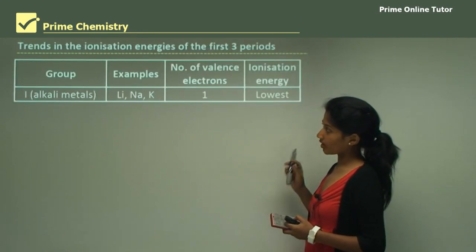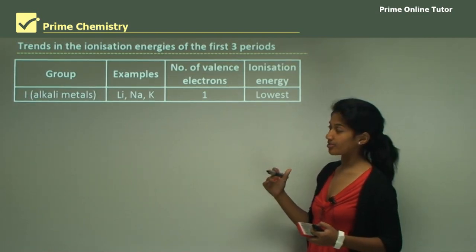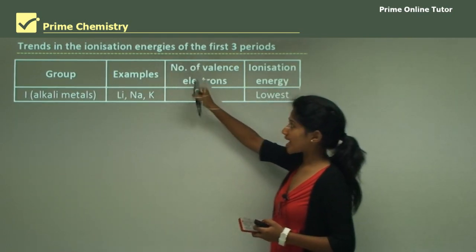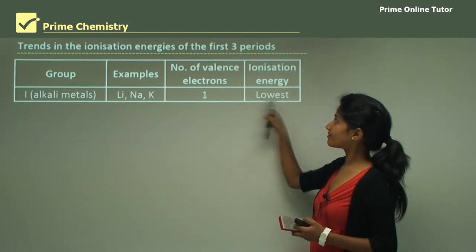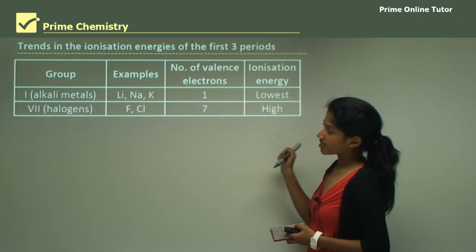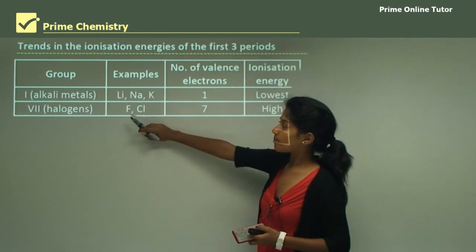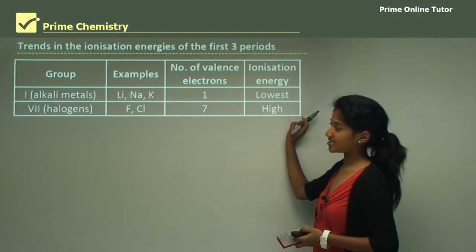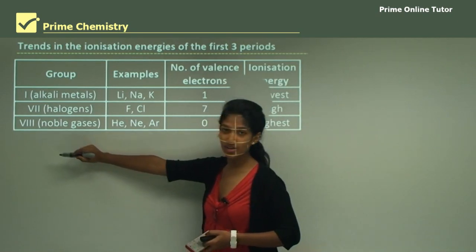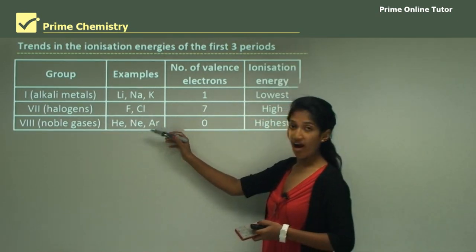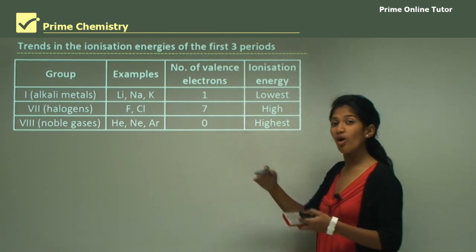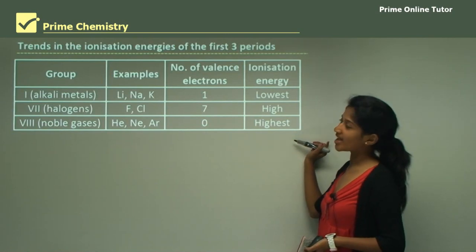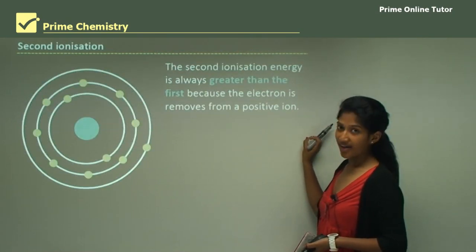Looking at trends for the first three periods: alkali metals — Group 1 elements such as lithium, sodium, and potassium — have only one valence electron, giving them a very low ionization energy. Halogens — Group 7 elements including fluorine and chlorine — have seven valence electrons, giving them a quite high ionization energy. Noble gases — Group 8 elements such as helium, neon, and argon — have a full outer shell, so they have the highest ionization energy.